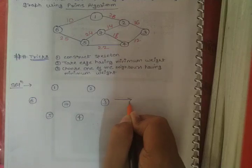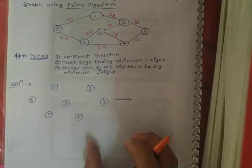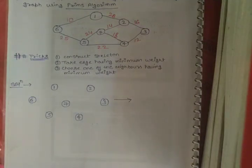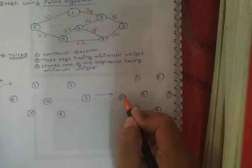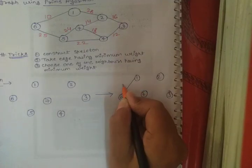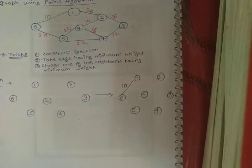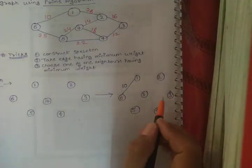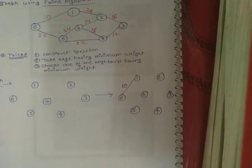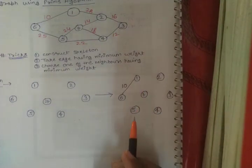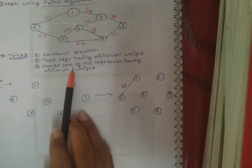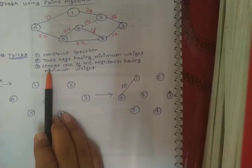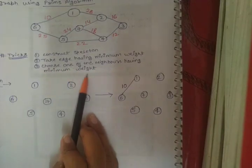So our second step is complete - we take the edge having minimum weight, which is the edge between nodes 6 and 1 with weight 10. After this step, we proceed to our third step: choose one of the neighbors of the selected nodes having minimum weight edge.